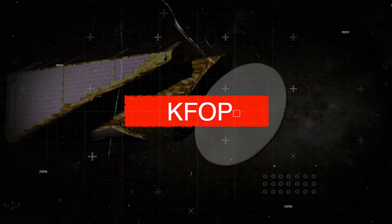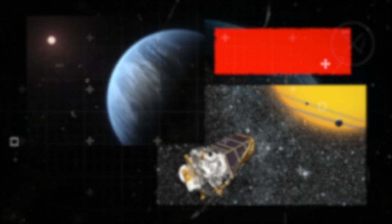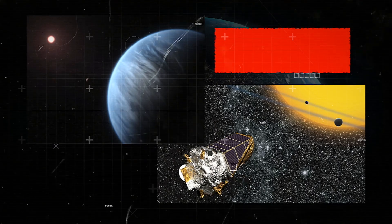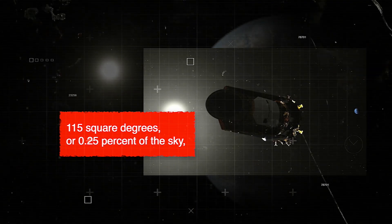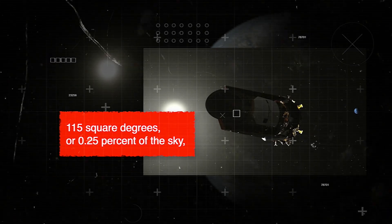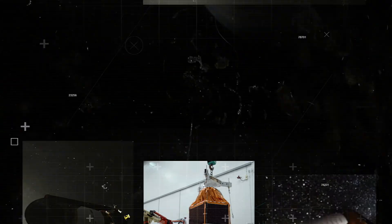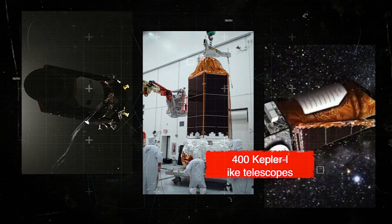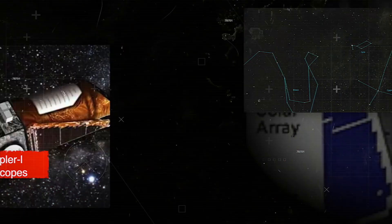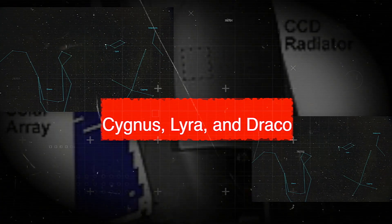The Kepler Follow-up Program, or KFOP, receives data on exoplanet candidates and conducts follow-up observations. The field of vision of Kepler is 115 square degrees, or 0.25% of the sky, or roughly two scoops of the Big Dipper. Roughly 400 Kepler-like telescopes would be required to cover the entire sky. The constellations Cygnus, Lyra, and Draco are all represented in the Kepler field.